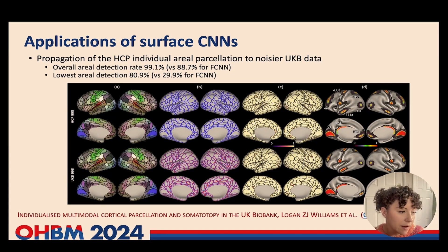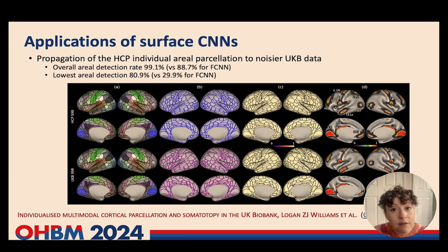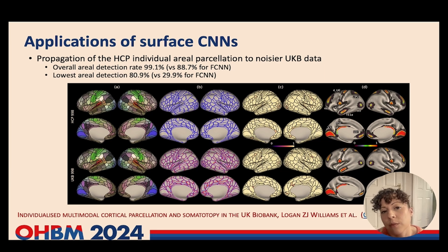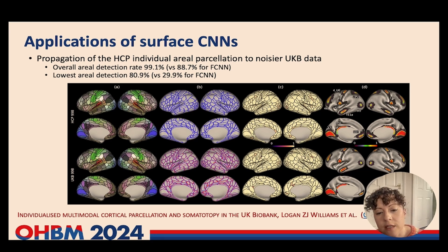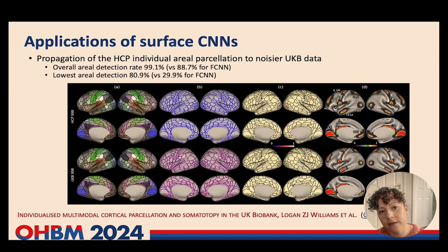We have used surface convolutional neural networks very successfully. For example, Logan used surface CNNs to generalise the HCP areal parcellation to the much noisier data of the UK Biobank in ways that strongly outperformed the vertex-wise classifiers originally used for the HCP Nature paper. We've also used surface CNNs to perform a range of image processing tasks, including the Geomorph framework for learning-based image registration — essentially a learning-based implementation of MSM that runs much faster, generalises across data sets, and performs as well as MSM all.